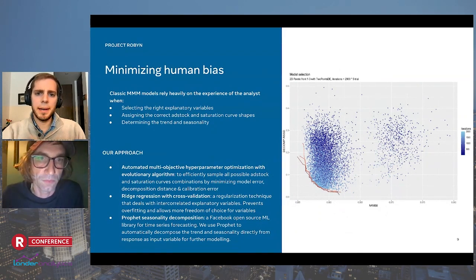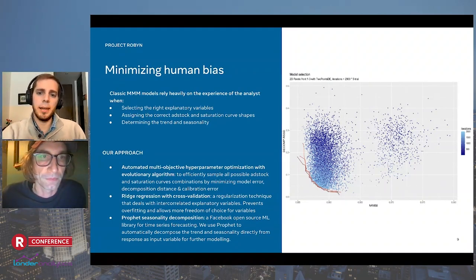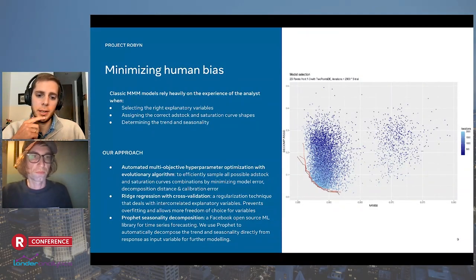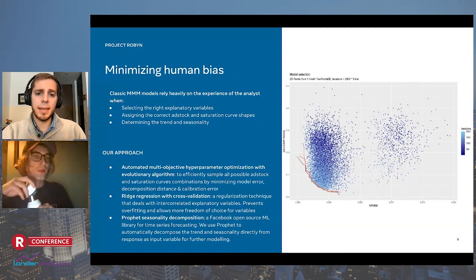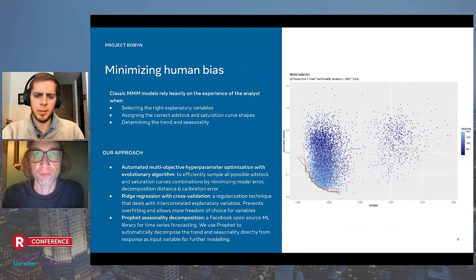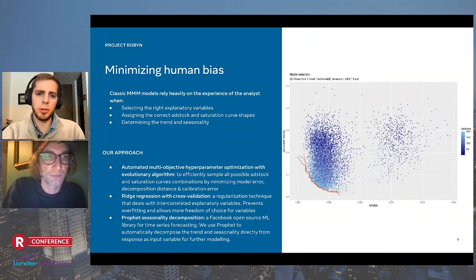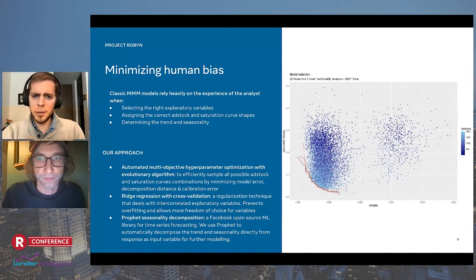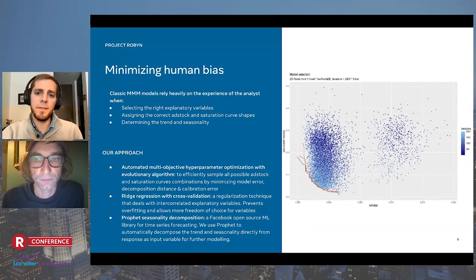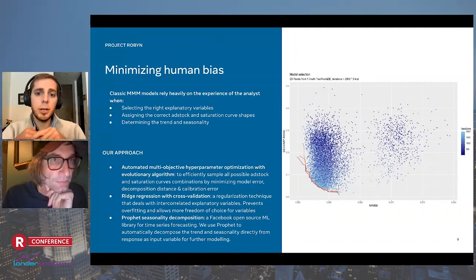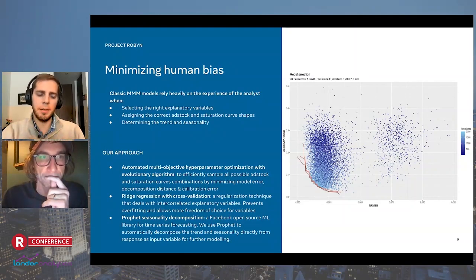Minimizing human bias is one of the key challenges Robin aims to solve. Classic MMM models rely heavily on the experience of the analyst, especially when selecting the right explanatory variables, assigning the correct adstock and saturation curve shapes and parameters, and determining trend and seasonality. Robin uses an automated multi-objective hyperparameter optimization with an evolutionary algorithm to efficiently sample thousands of possible adstock and saturation curve combinations while minimizing three main errors: model error, decomposition distance, and calibration error.